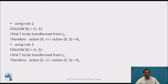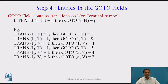Using rule 1: FOLLOW(E) = {plus, dollar}, I find T transformed from I5, so action[5,plus] = action[5,$] = r1. For non-terminals, we use a function called GOTO. GOTO contains the transitions of all non-terminal symbols: if transition Ii,N equals Ij then GOTO[i,N] = j. So transition I1,E = I2 gives GOTO[1,E] = 2; I1,T = I9 gives GOTO[1,T] = 9; I1,V = I4 gives GOTO[1,V] = 4; I3,T = I5 gives GOTO[3,T] = 5; I3,V = I4 gives GOTO[3,V] = 4; I6,V = I7 gives GOTO[6,V] = 7.